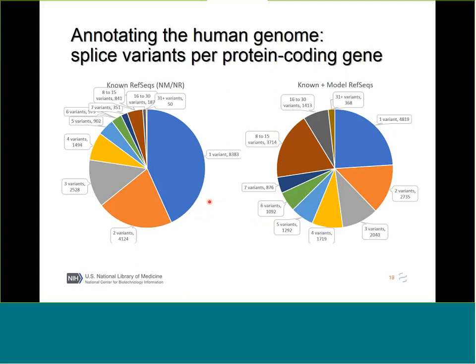Looking at splice variation, just for coding genes: about 43% of coding genes only have one known RefSeq coding transcript at this point. If you include models, that goes down to about a quarter, with a large set of genes having more splice variation represented. These numbers keep increasing, but most of the highest-value annotation is already represented in the known set.